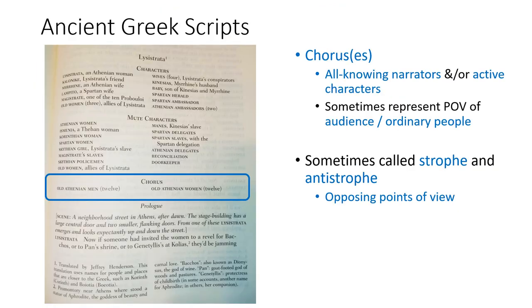Ancient Greek plays are a little different because they often include a chorus — a group of side characters who speak during the play. The chorus can work like an all-knowing narrator who helps guide the audience through the experience but doesn't really interact with the main characters. Other choruses are groups of characters who participate in the action, each member with their own personality and point of view, often making wise or funny comments and providing comic relief. Still other Greek plays have two choruses representing opposing points of view: the strophe, which represents one side of the conflict, and the anti-strophe, which speaks for the other side. If you see the terms strophe and anti-strophe in a Greek play, that's what they mean.